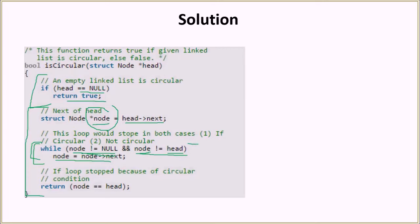Eventually one of these conditions will become true in any linked list and the loop will break. To return the result to the calling function, we simply return the comparison of node with head. If node equals head, that means it is a circular linked list, because node holds the last value from the loop. If it is not equal, then it is not a circular linked list — a pretty simple approach.